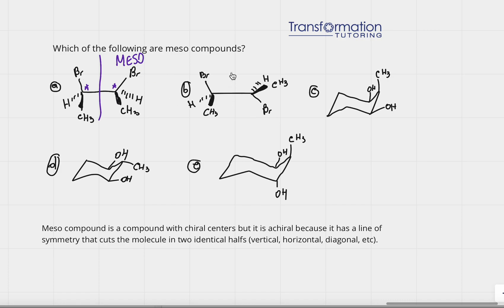Now let's look at molecule B. It has the same connections as A, so there is a chiral center here and a chiral center here. In order to determine if there is a line of symmetry, everything must be aligned. But one bromine is up and the other bromine is down, so we cannot tell if this is a meso compound until we align them. We do that by rotating around the single bond.